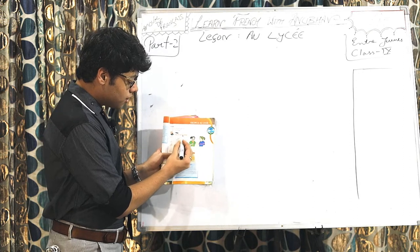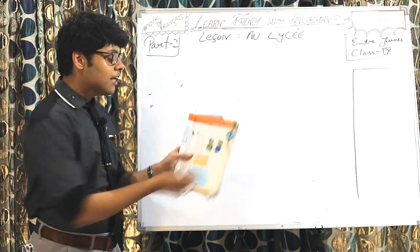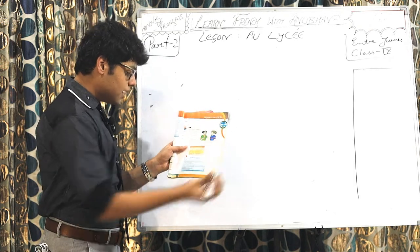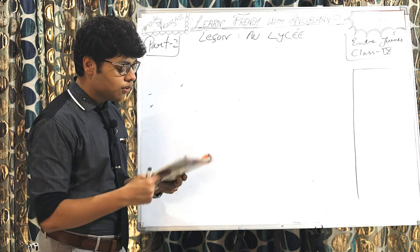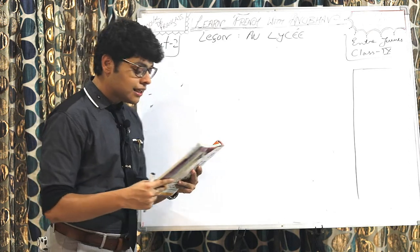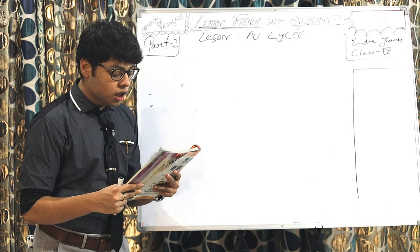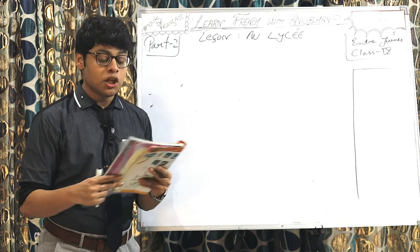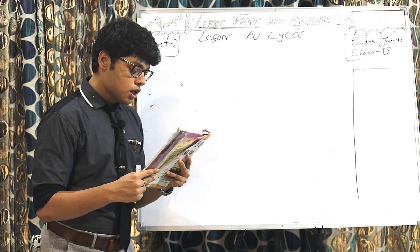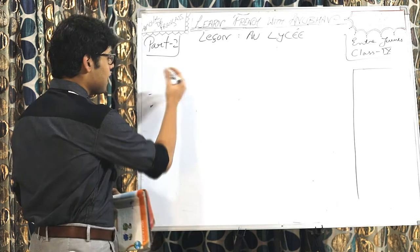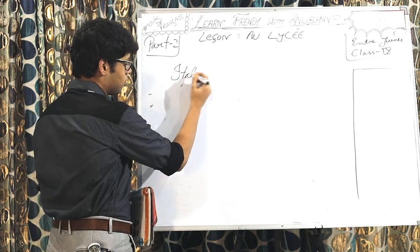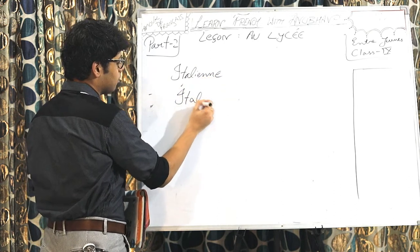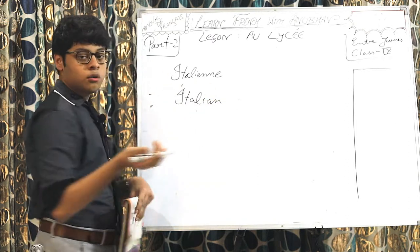We are on page number 19. Before the music class, we can see a picture with two girls talking to each other, Nargis and Pauline. Now let's see what all they are talking about. Pauline says, You say, nous avons un nouveau professeur de musique. You know, we have a new music professor. L.A. Italian.